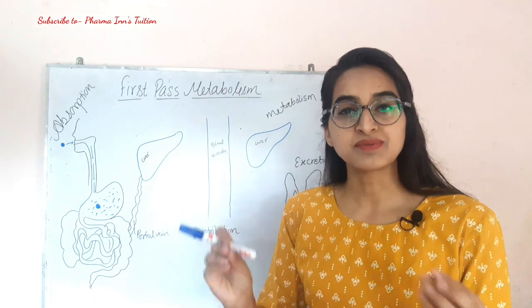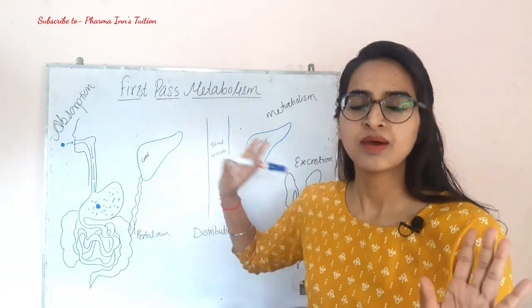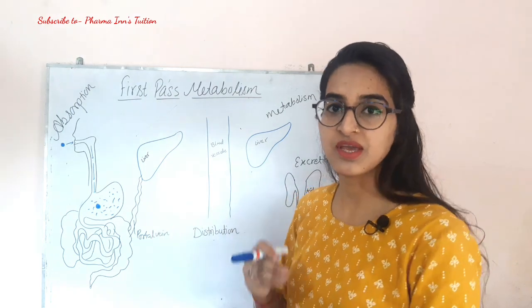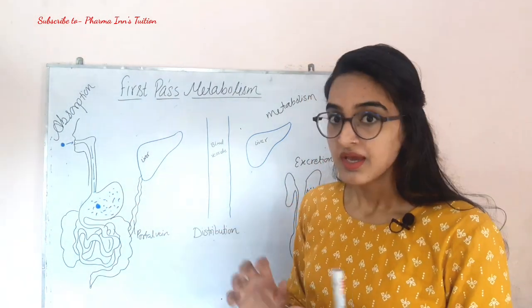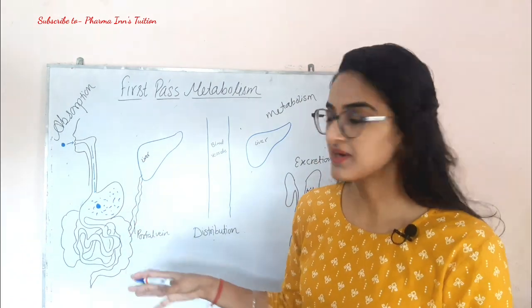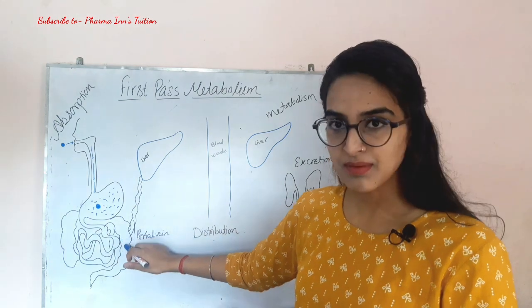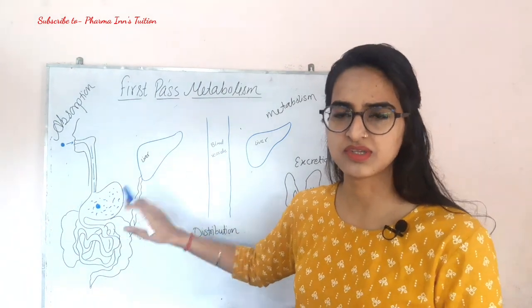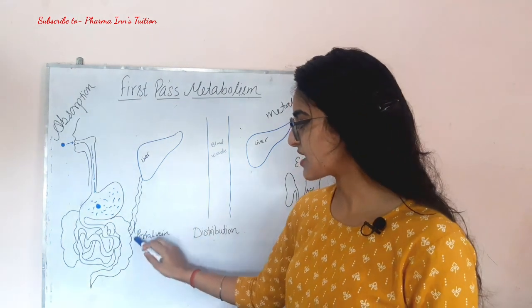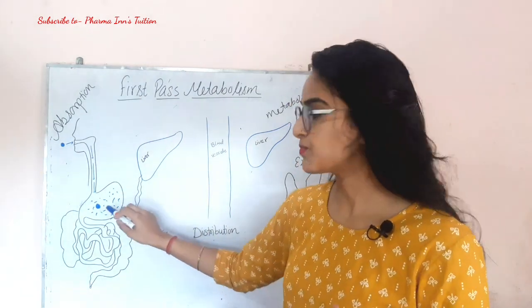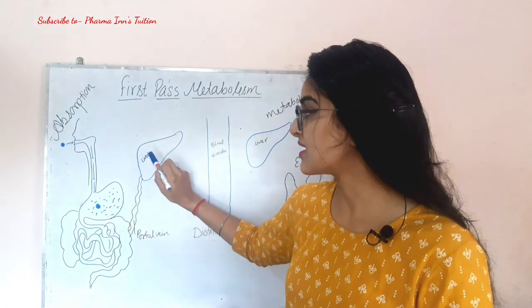But when it comes to first-pass metabolism, it is not a very confusing topic — it is actually a very easy topic. When the drug is present in our stomach or intestine and is divided into small parts, there are many blood vessels called portal veins present here. When the drug is absorbed through these portal veins, it goes into the liver.